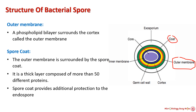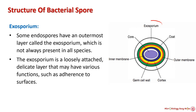The outer membrane is surrounded by the spore coat — a thick layer composed of more than 50 different proteins which are highly cross-linked to each other. The spore coat provides additional protection to the endospore, consists of multiple layers, and is highly resistant to chemicals and enzymatic degradation.